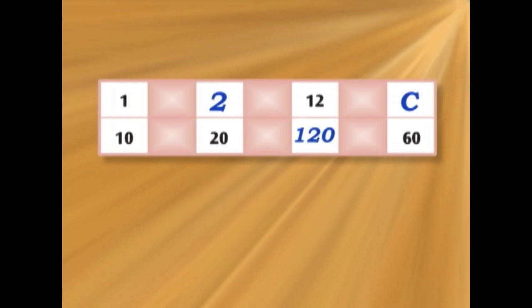But we don't know what C is. So 12 over 120 is the same as C over 60. What's the relationship between 120 and 60? Are we going to multiply or divide? We're going to divide. So if we divide 120 by 2, we get 60. If we divide 12 by 2, we get 6.